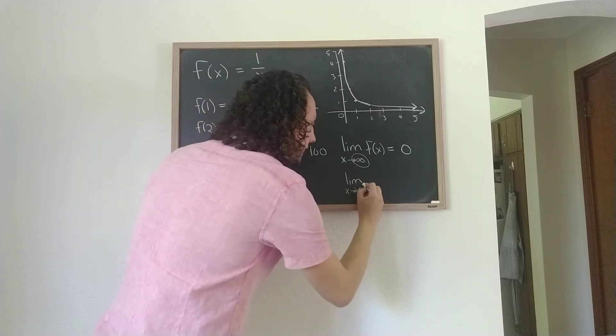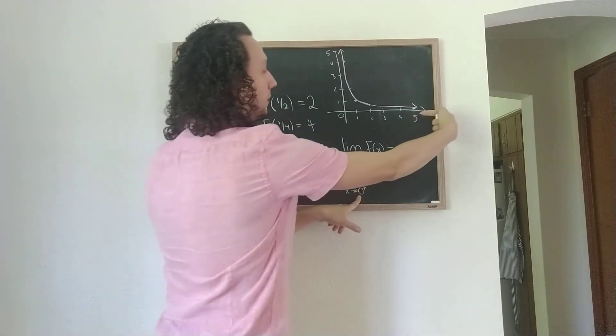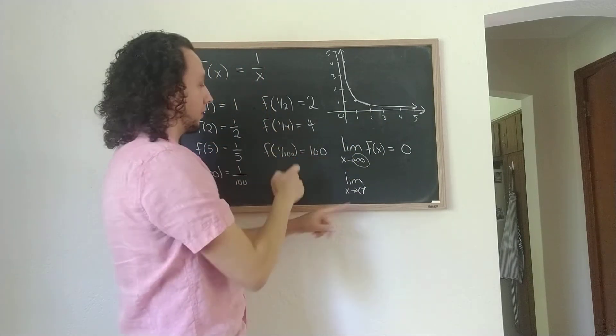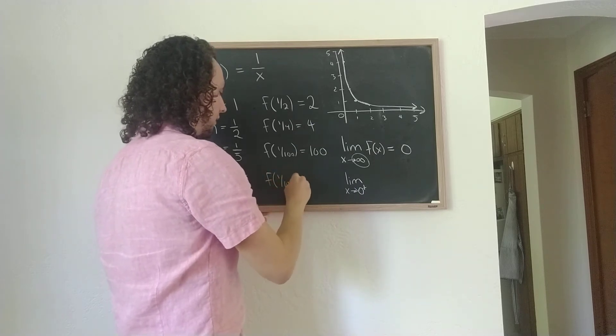So I'll put a little plus sign here, and that just means as x goes to 0 from the right, from positive numbers like this, a half, a quarter, one over a hundred. I could keep going, one over a thousand.